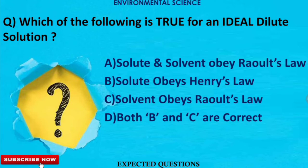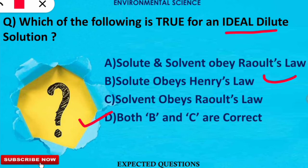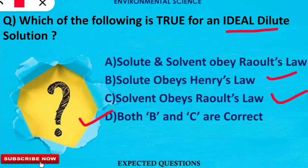The next question is: which of the following is true for an ideal dilute solution? The correct option is option D — in an ideal dilute solution, the solute obeys Henry's law and the solvent obeys Raoult's law. If you want to know more about environmental chemistry, click on the link in the description to go to the playlist.